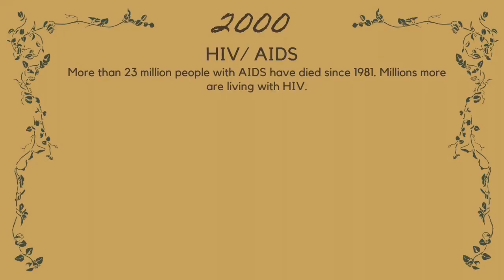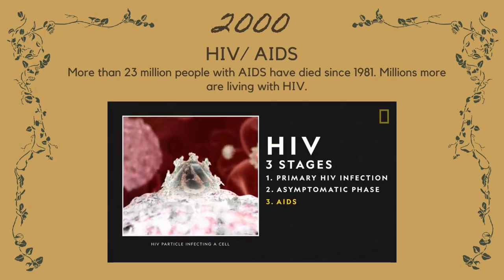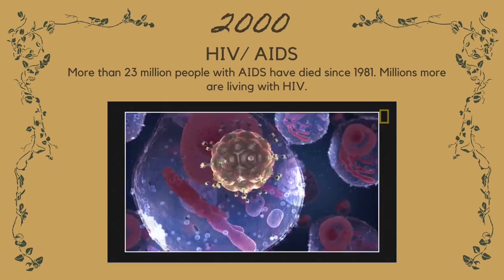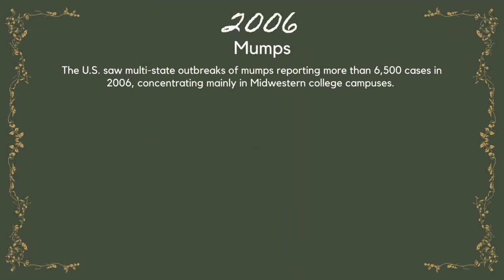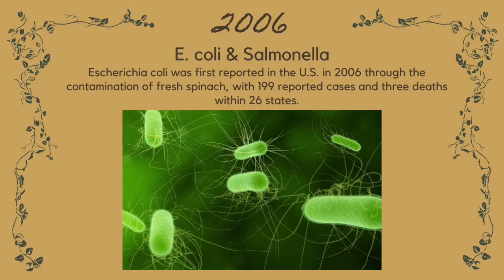2000 — HIV/AIDS. More than 23 million people with AIDS have died since 1981; millions more are living with HIV. 2006 — Mumps. The U.S. saw multi-state outbreaks of mumps reporting more than 6,500 cases in 2006, concentrating mainly in Midwestern college campuses. 2006 — E. coli and Salmonella. Escherichia coli was first reported in the U.S. in 2006 through the contamination of fresh spinach, with 199 reported cases and 3 deaths within 26 states.